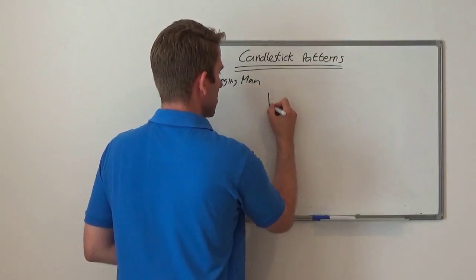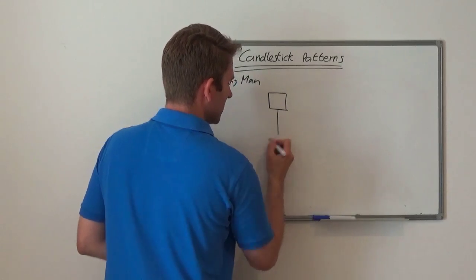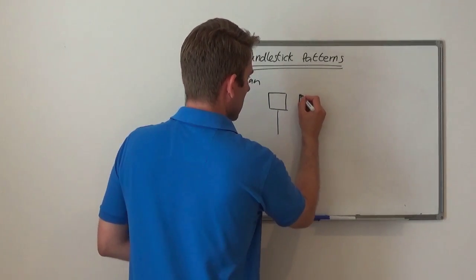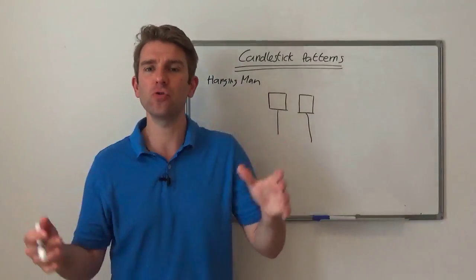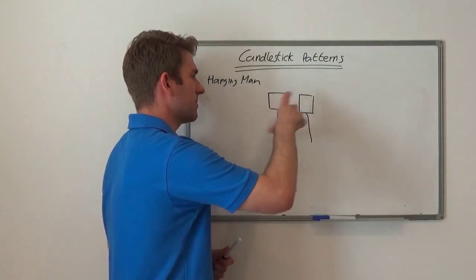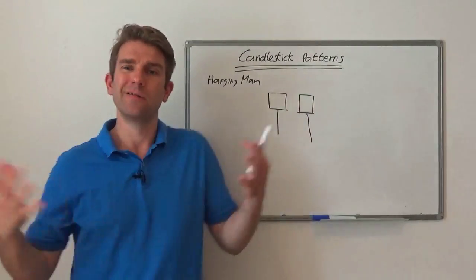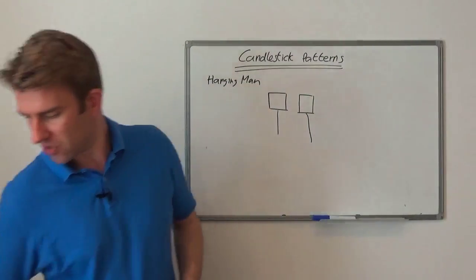Let's have a look at it. So this is what you get: you get a decent size tail and a smaller body. Now officially there's probably some official line in the textbook that says that tail's got to be X percent of the body to be an official hanging man.